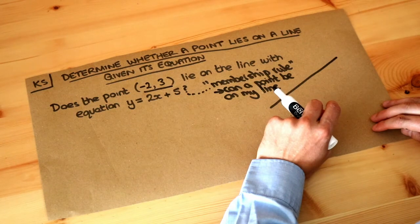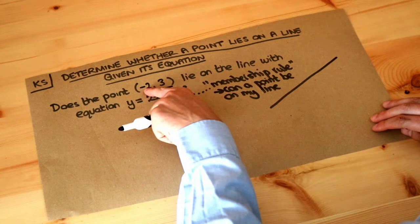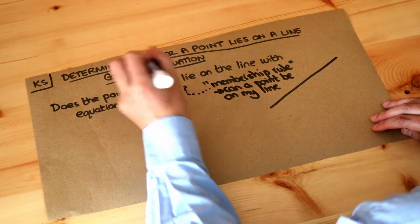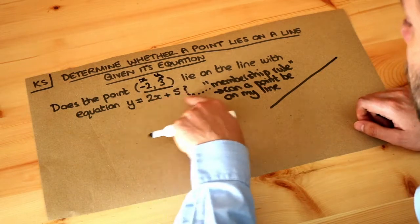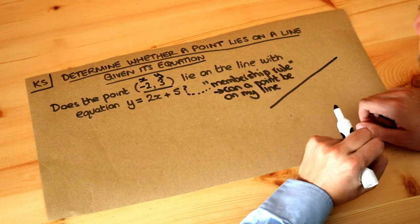We do that by substituting the values in. Remember, the first value in a coordinate is the x value and the second value is the y value. So we'll substitute the x and y into this equation to see if it obeys the membership rule.